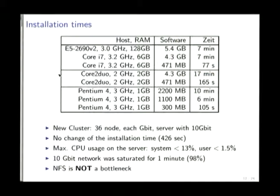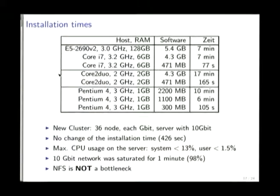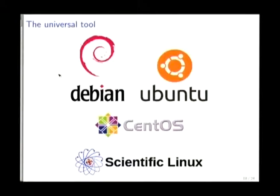The installations are also very fast. People installing clusters sometimes worry that NFS may be a problem — it's not. A complete installation in seven minutes and you don't have to attend it; you can go get a coffee. So why is FAI the universal tool? It started with installing Debian, but in the meantime we can also install Ubuntu, CentOS, Scientific Linux, and OpenSUSE.